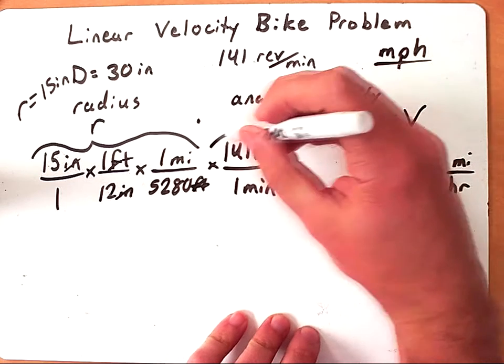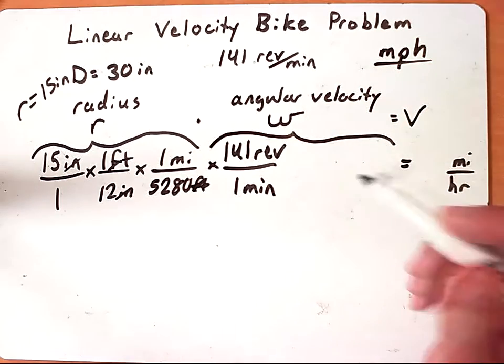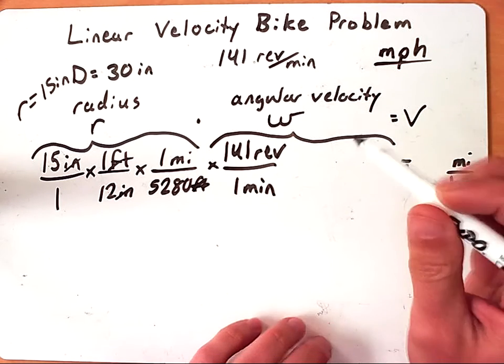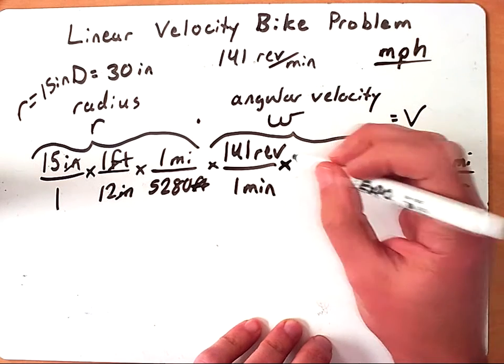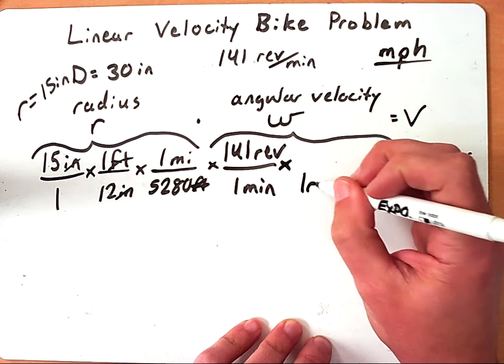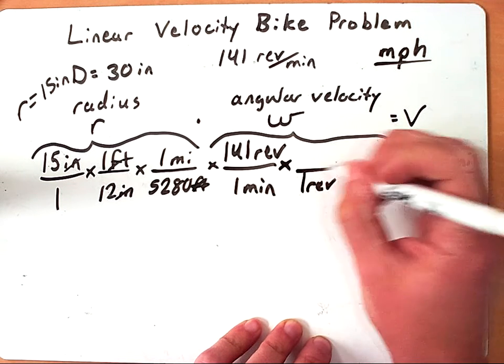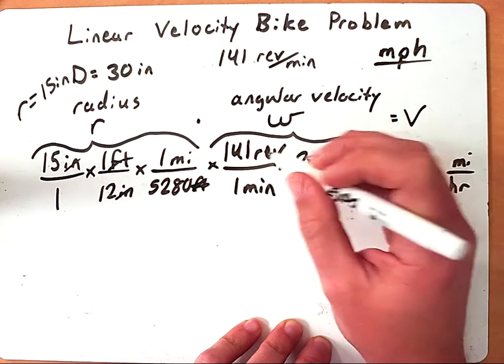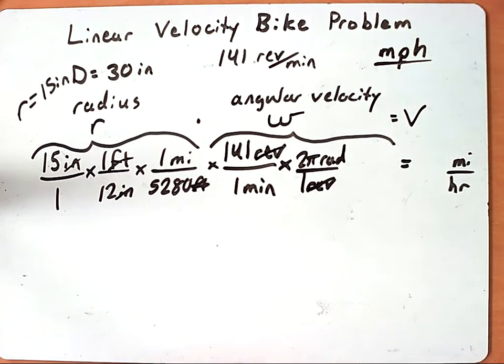All right, so we said earlier that we have revolutions. We need to convert that to radians to actually get angular velocity. So I'm going to put one revolution on bottom, which would equal 2π radians on top. So that takes care of the revolutions.